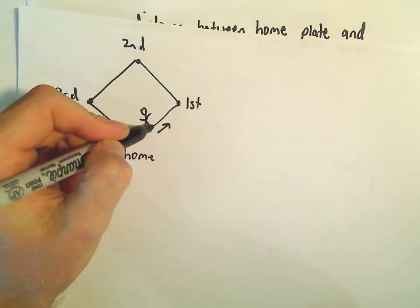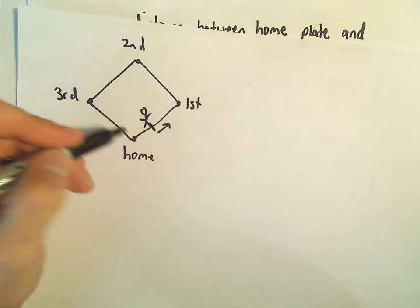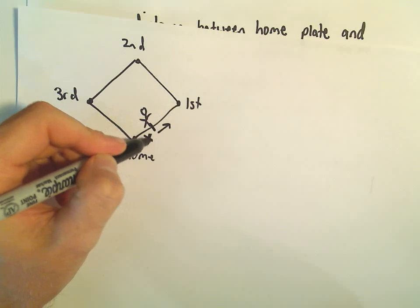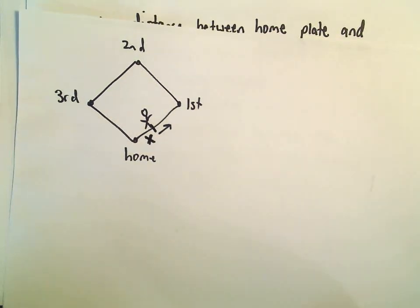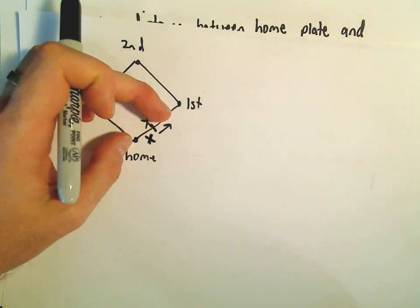So the way I'm going to set this up is I'm going to suppose that this person has already ran, you know, x units generically. Again, this distance is going to change as time progresses.